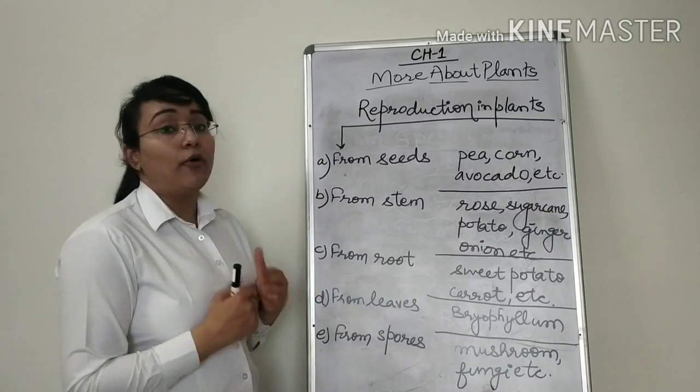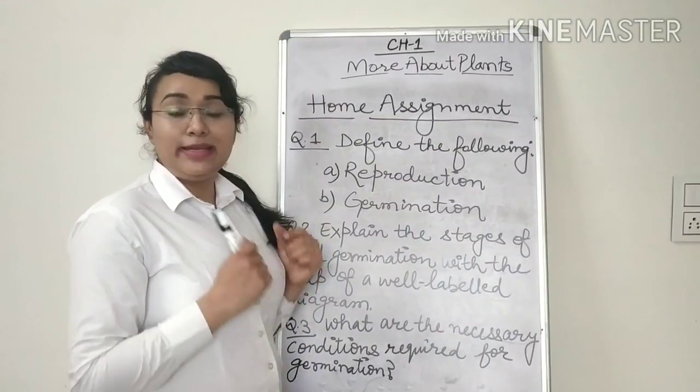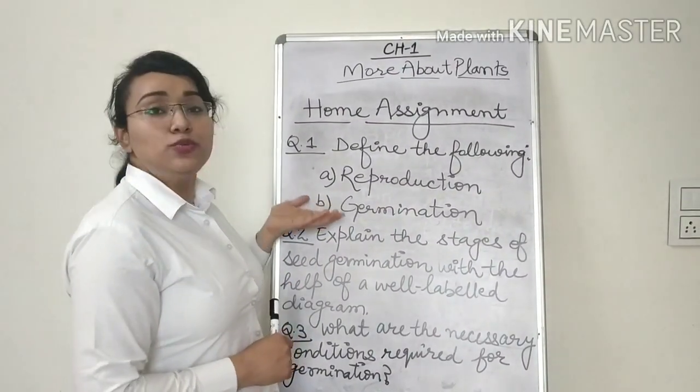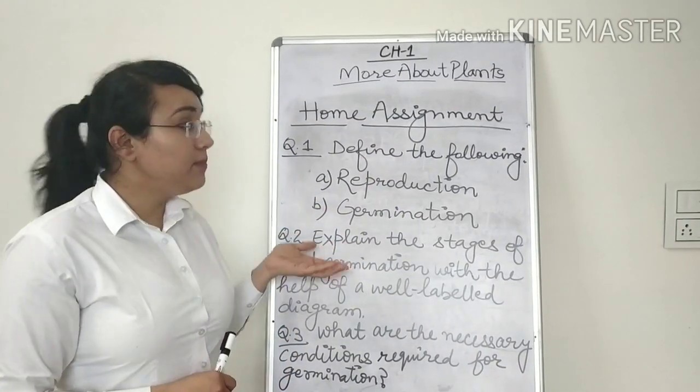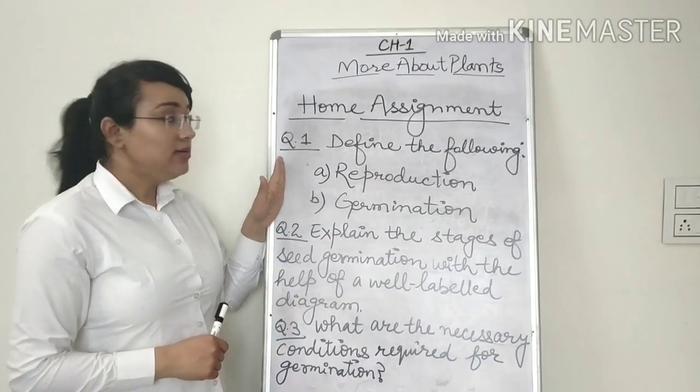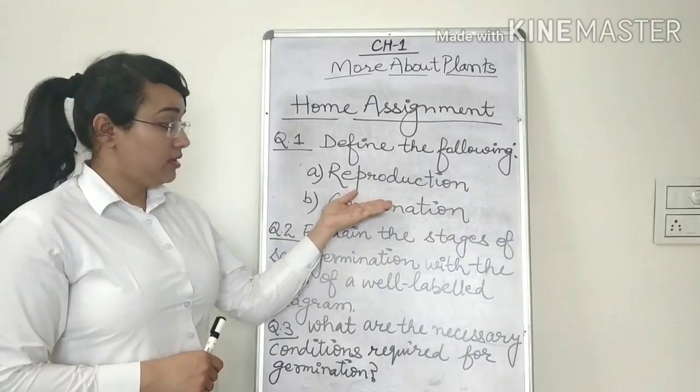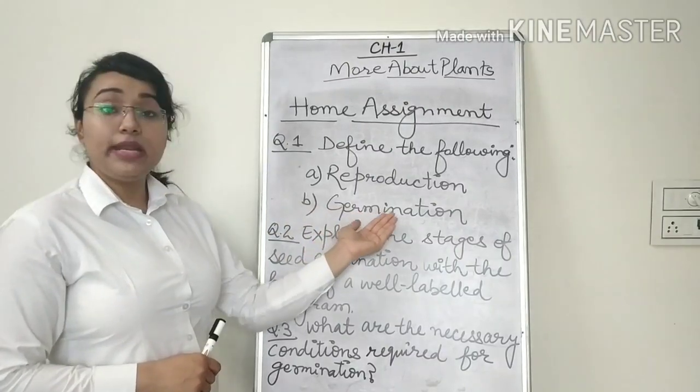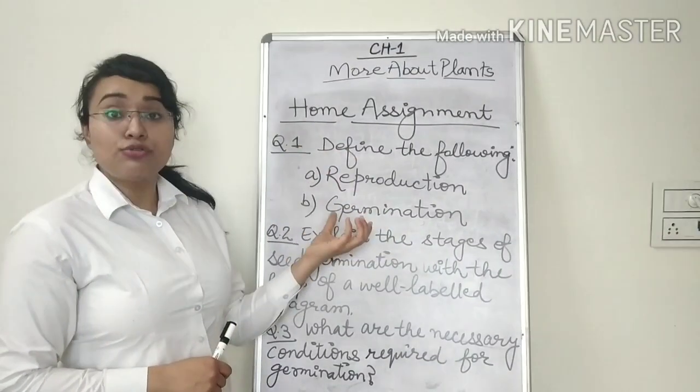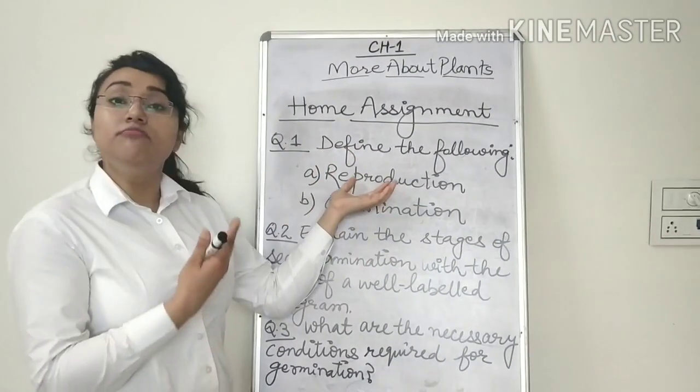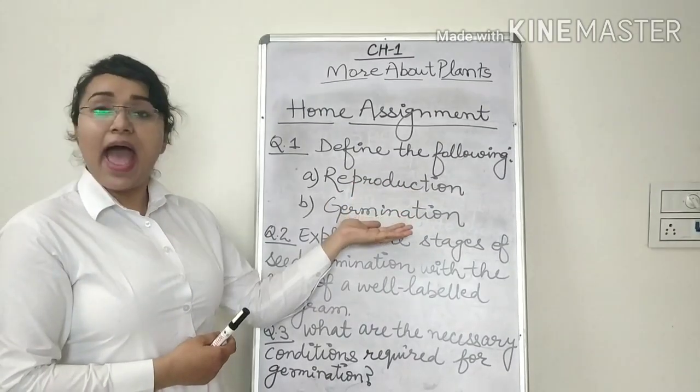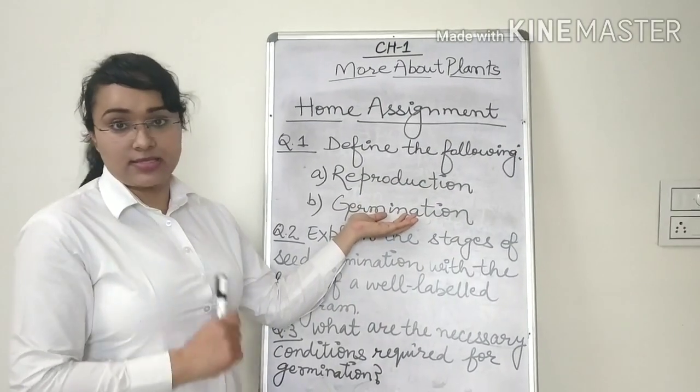Now this was all about the reproduction. So my dear children, here is a small home assignment for you all. Question number one, define the following. A, reproduction. B, germination. You're supposed to write the definition or the meaning of reproduction and germination as discussed in the lesson today.